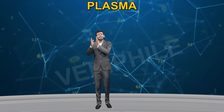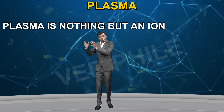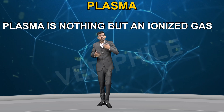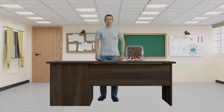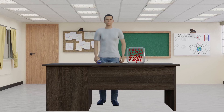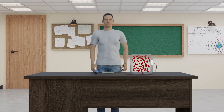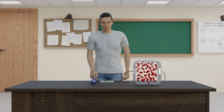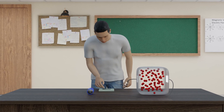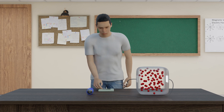Let's revise plasma once more. Plasma is nothing but just an ionized gas. You can create it by exposing gas to a high electric field using two electrodes — one anode and one cathode — to provide a high electric field. This ionizes the gas atoms.